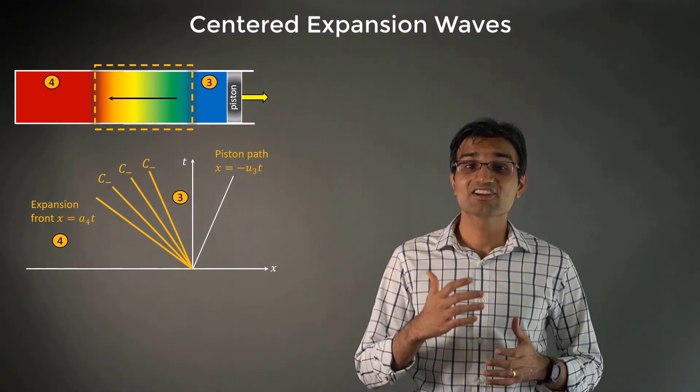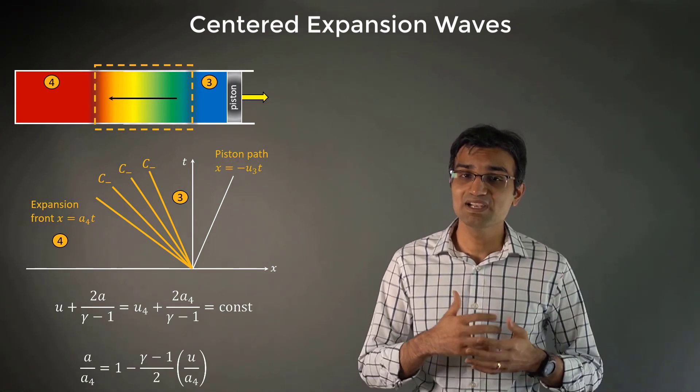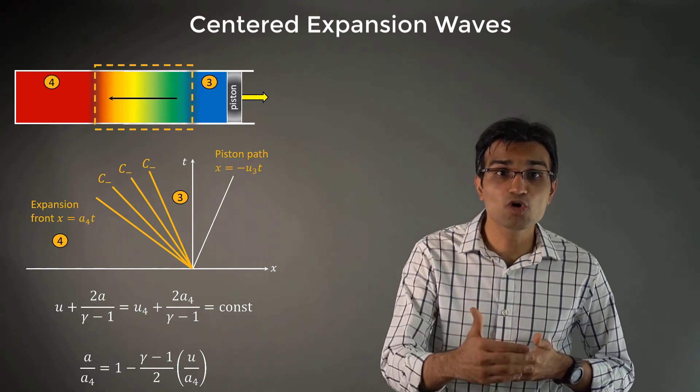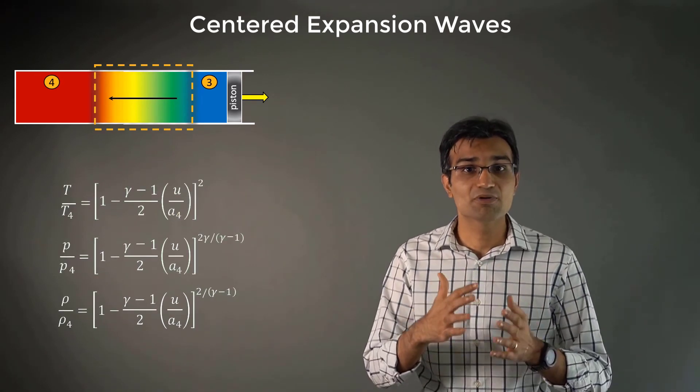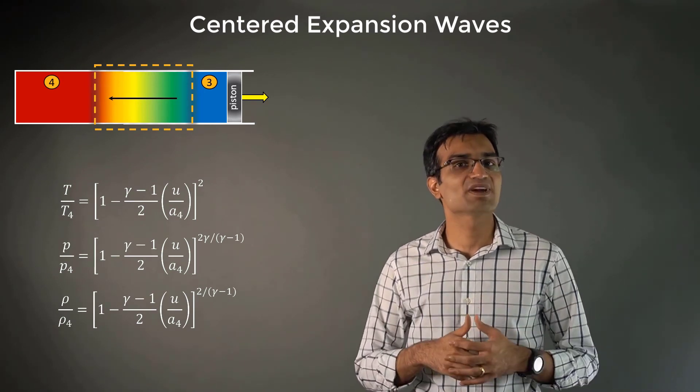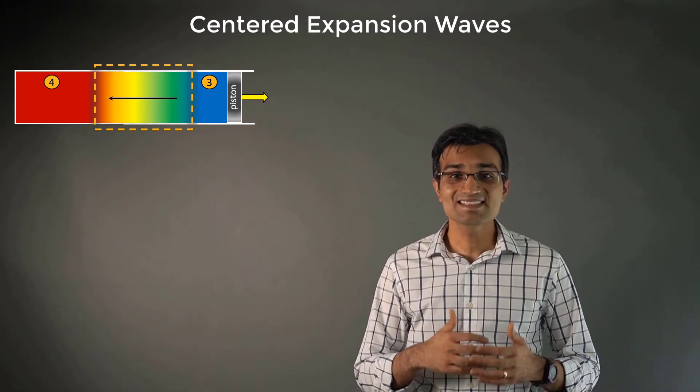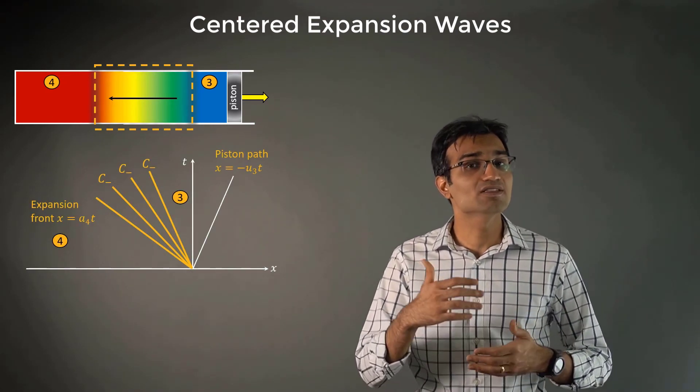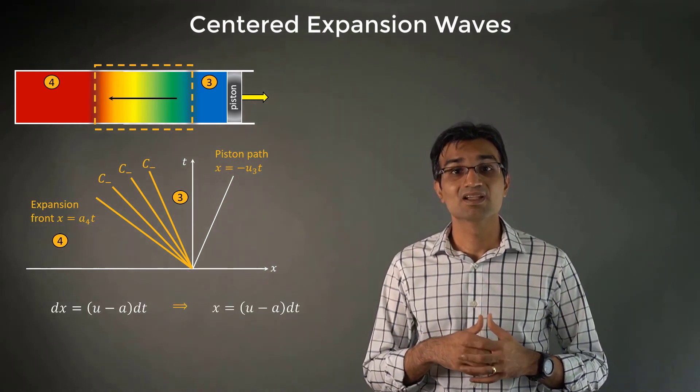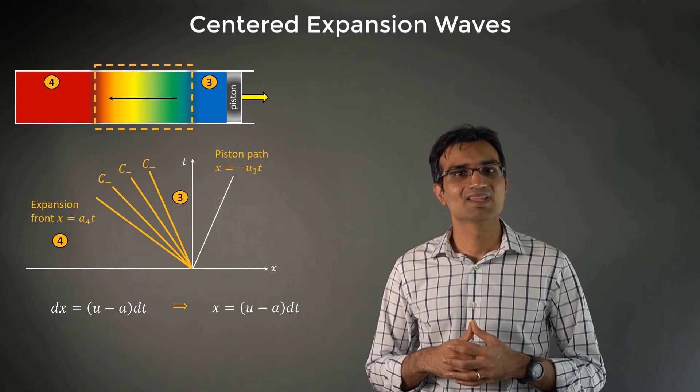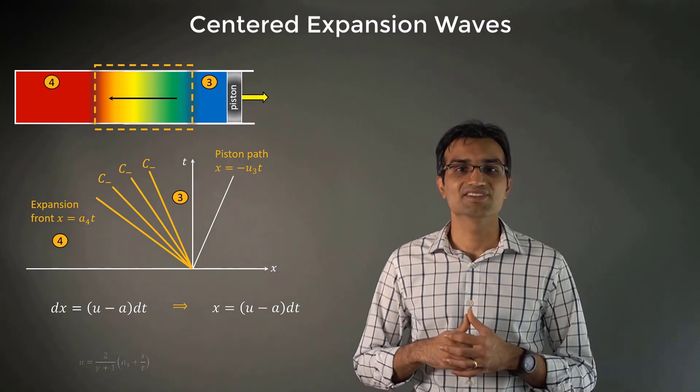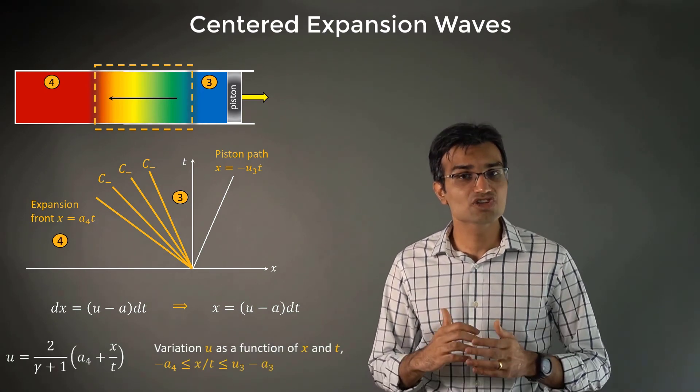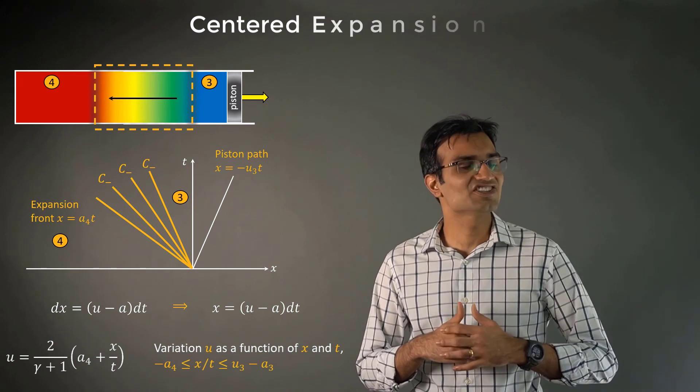Using this, we can get a relation between U and A in a simple expansion wave. We can obtain relations between the local gas velocity and temperature, pressure and density using the isentropic relations. Since the expansion wave shown here is a left running expanding wave along the fan of C minus characteristic, which are straight lines through the origin, we can derive the following relation. This equation allows us to calculate the variation of U as a function of X and T in the expansion region.